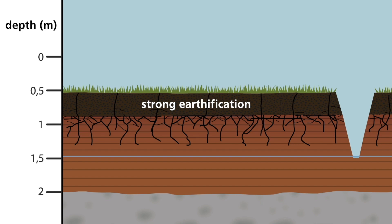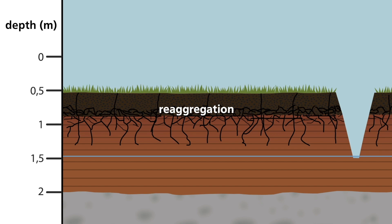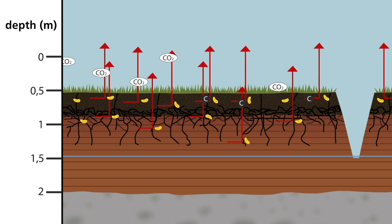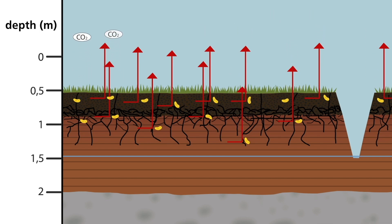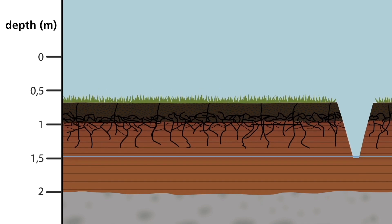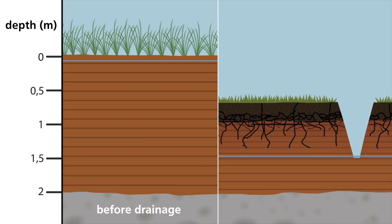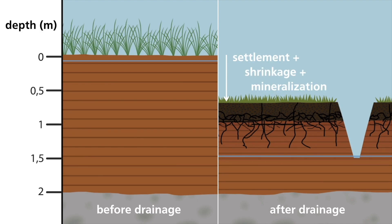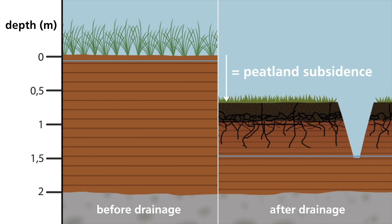This fine, strongly earthified soil can then re-aggregate, forming particularly dense aggregates. With deep drainage, mineralization occurs in a much thicker layer of the peat. Because of this, massive carbon dioxide emissions ensue. The peat soil literally disappears into thin air and the land surface subsides further. For the total loss in elevation following drainage — caused by the combined effects of peat settlement, shrinkage, and mineralization — the term peatland subsidence is used.